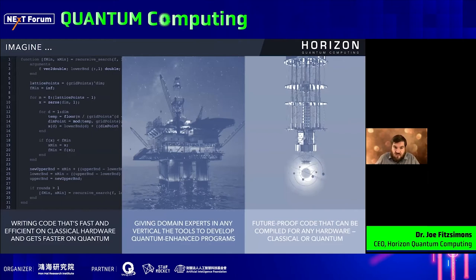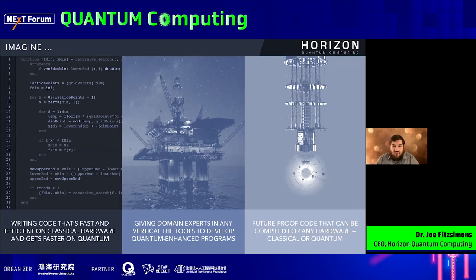But things could be different. Imagine if you could write code that was fast and efficient on a conventional computer, but was automatically accelerated on quantum hardware. Imagine if domain experts who are already capable of programming conventional computers were able to take advantage of quantum hardware to accelerate their applications without needing a PhD — giving people in, for example, the oil and gas industry, computational fluid dynamics, finance, and other sectors the capability to build quantum-enhanced programs without needing to understand the underlying model.